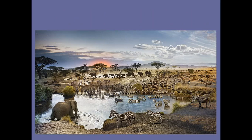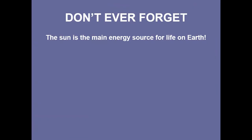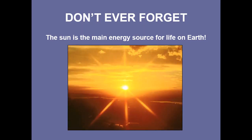When we add those abiotic factors — like the water in this pond, the ground, the clouds, the sunlight — what do we call this whole system? That would be an ecosystem, made up of biotic and abiotic factors that interact with each other. And don't ever forget: the sun is the main source of energy for life on Earth. We're going to go into this many times throughout the year. If we didn't have the sun, we would not survive.